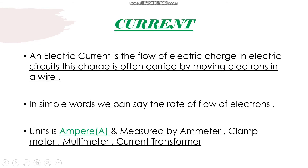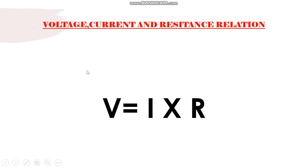Now come to the voltage, current, and resistance relationship. Voltage V equals I times R. As per this relation, voltage is directly proportional to current — if we increase the voltage, current will increase; if we decrease the voltage, flow of current will decrease. In terms of current and resistance, resistance is inversely proportional to current — if we increase the resistance, current will decrease, and if we decrease the resistance, current will increase.